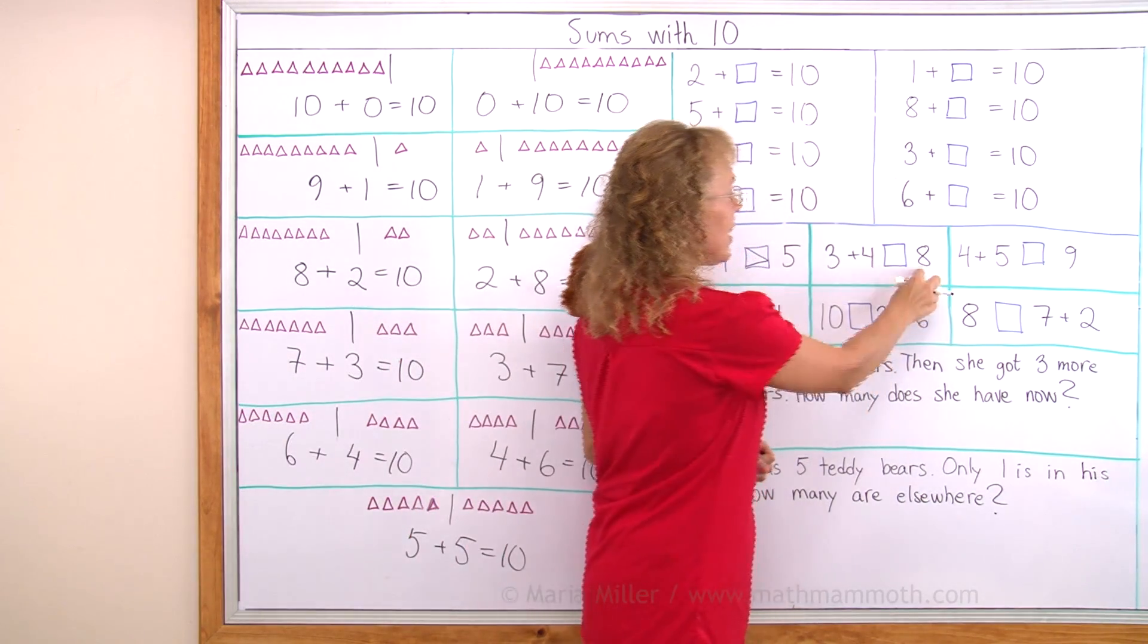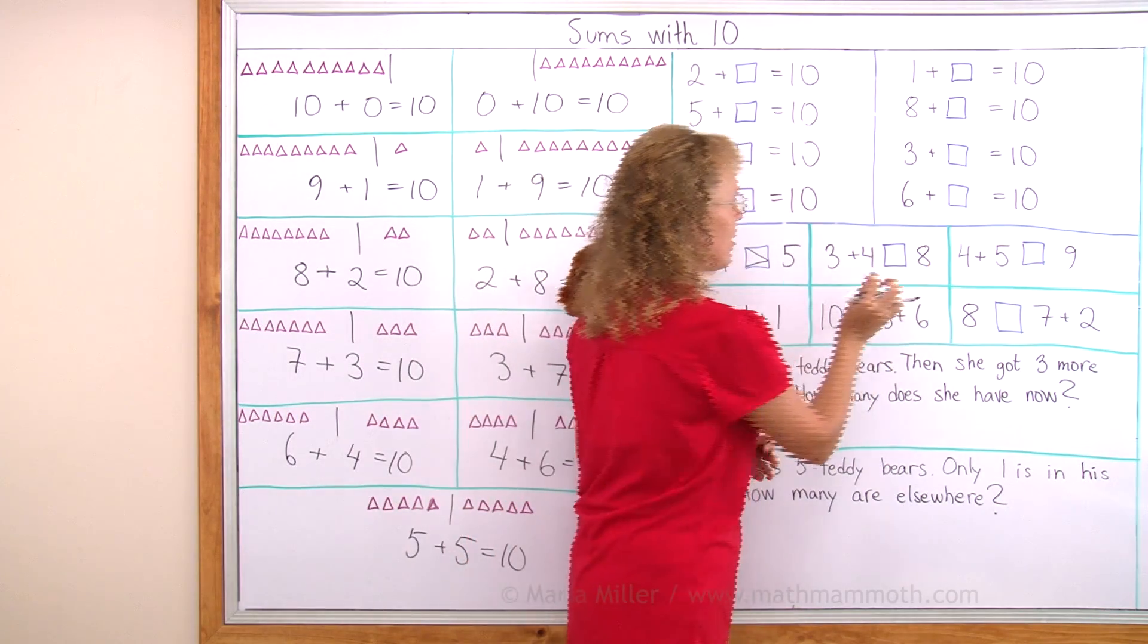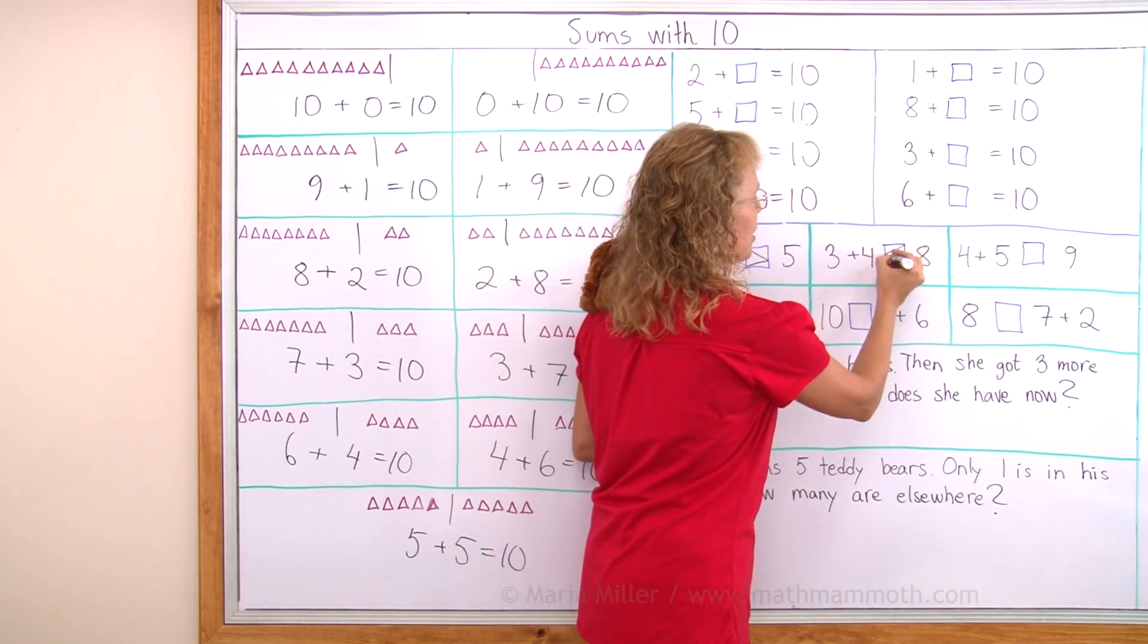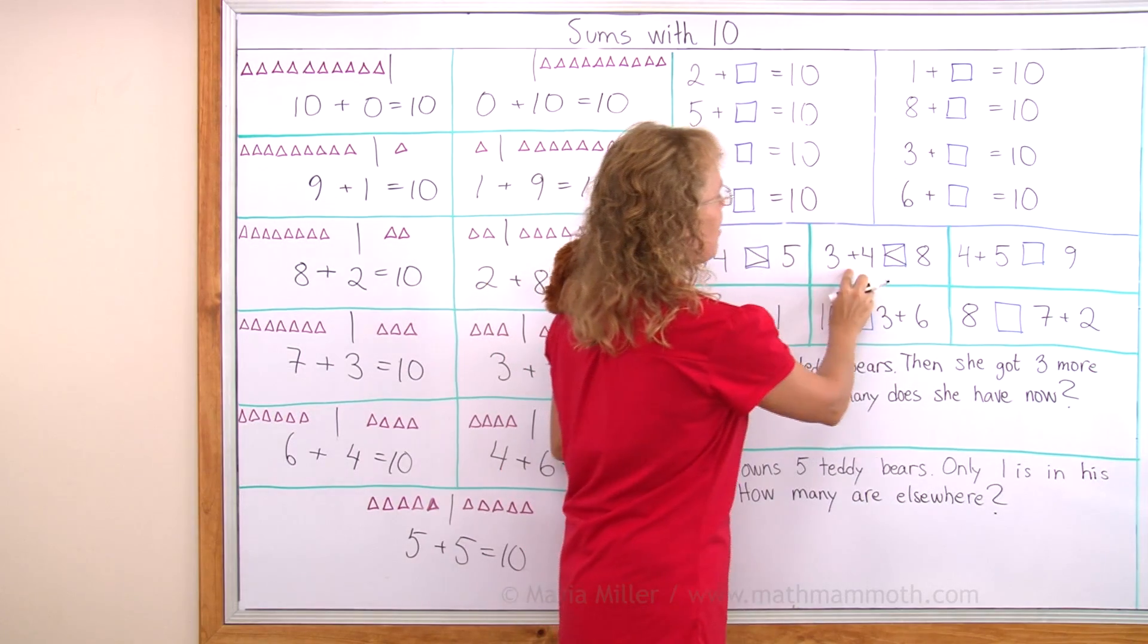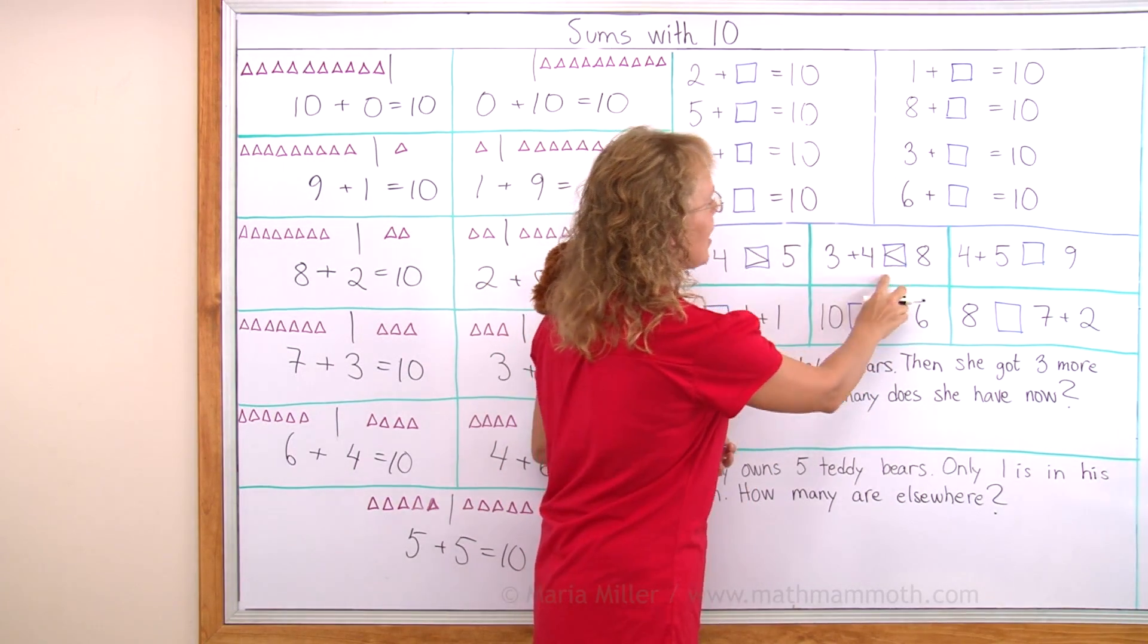3 plus 4 is 8. 3 plus 4 is 7. Then 8. 8 is more. So we draw the mouth this way. 7 is less than 8. Or 3 plus 4 is less than 8.